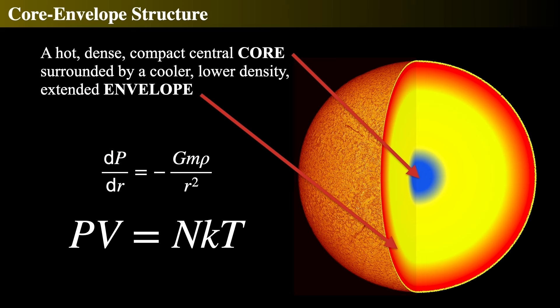Let's apply the ideal gas law to the core-envelope structure of a star such as the Sun. The deeper you go into the star, the greater the pressure. And the ideal gas law says that if you put gas under pressure, it must be hotter and hotter. So down in the core of the star, it's going to be extraordinarily hot — much hotter than the surface.